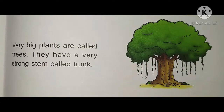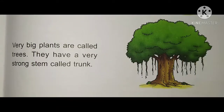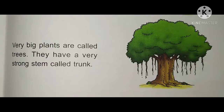The root holds the plant in the ground and keeps it upright. The part above the root that keeps the plant straight is called the stem. A tree's stem is very strong, and the stem of a tree is called a trunk.